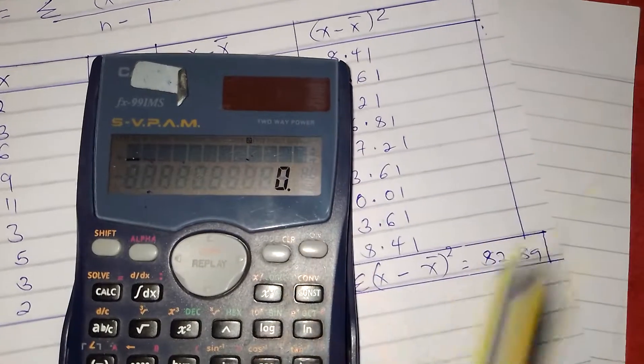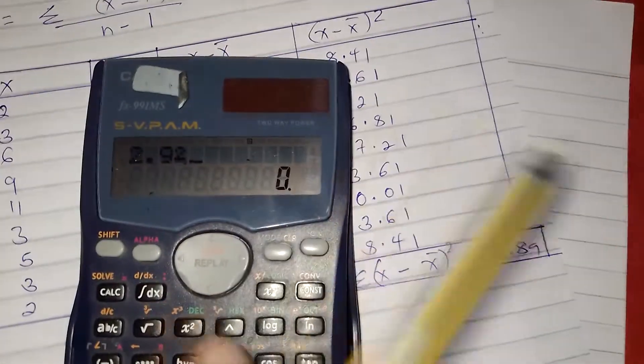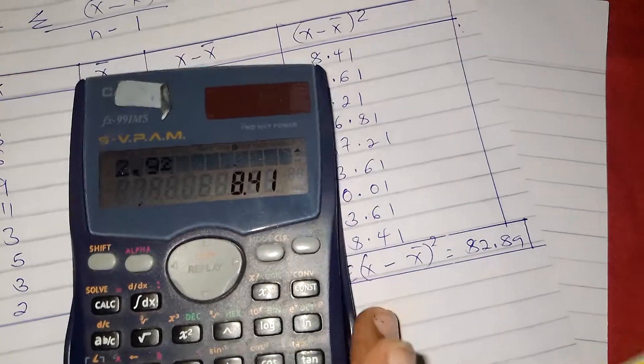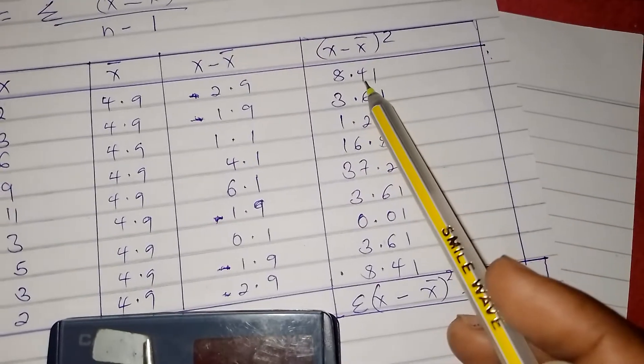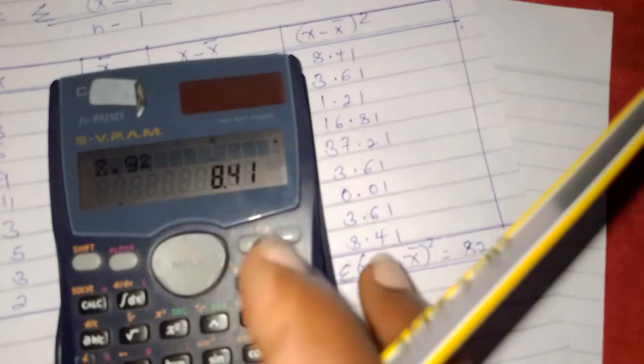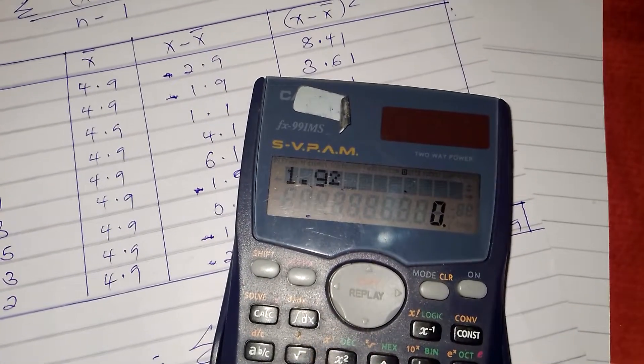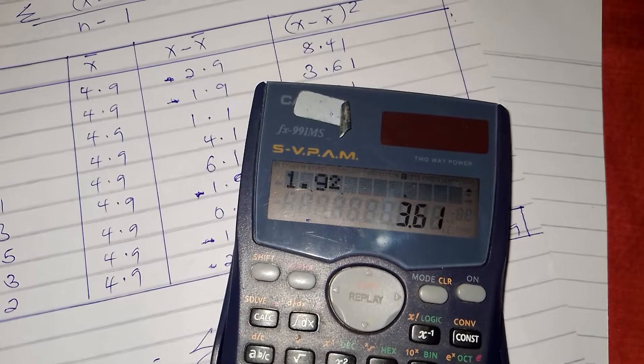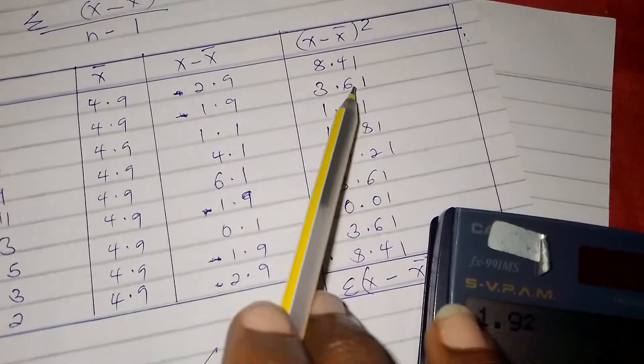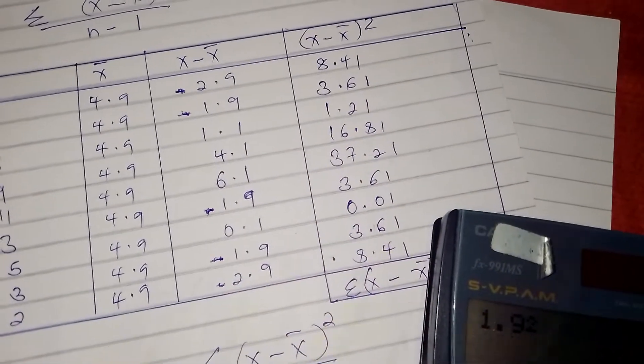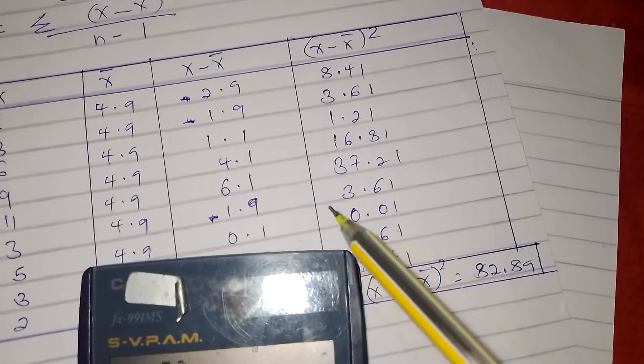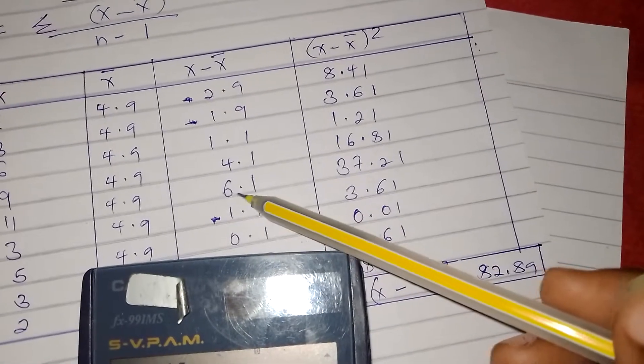It is 2.9 squared, you get 8.41. Then 1.9 squared, you get 3.61.